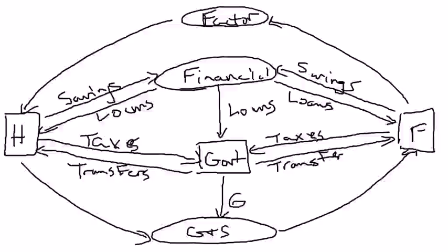Suppose for the sake of argument the government goes ahead and spends an extra $100 billion on goods and services — so it buys roads, bridges, maybe tanks or whatever it is the government's buying. Then that's going to be an extra $100 billion worth of revenue here for firms.